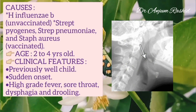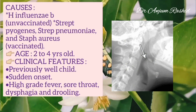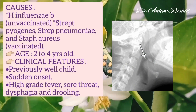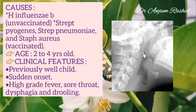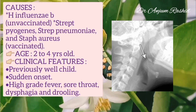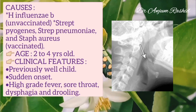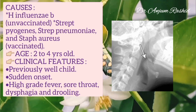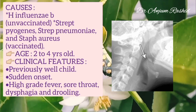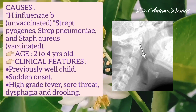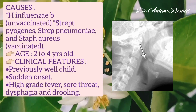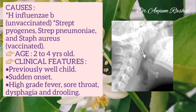Acute epiglottitis is caused by the microorganism Haemophilus influenzae type B in unvaccinated children, and by Streptococcus pyogenes, Streptococcus pneumoniae, and Staphylococcus aureus in vaccinated children.